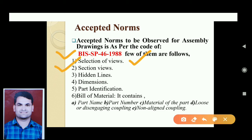The second norm is section views. Sectioning is used in assembly drawings to eliminate the need to draw hidden parts. Any kind of sectional view — such as full section, half section, aligned section, or opposite section — may be used. The third norm is hidden lines: hidden lines in assembly drawings are generally not needed due to the extensive use of sectional views, and should only be used wherever necessary for clarity.